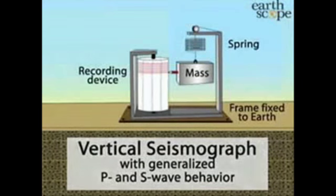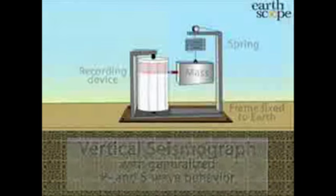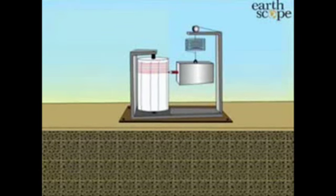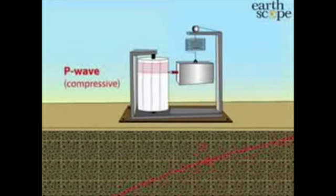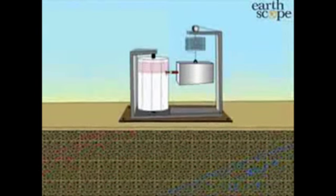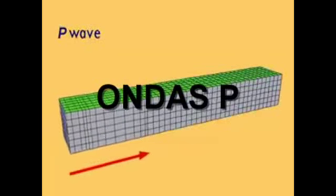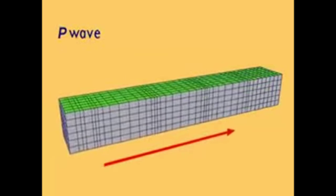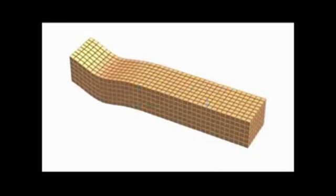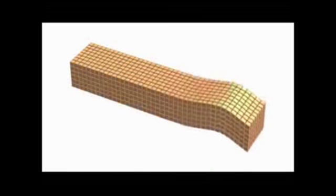Los terremotos se miden a través de un instrumento llamado sismógrafo, que registra en un papel la vibración de la Tierra producida por el sismo. A estos gráficos se llaman sismogramas, y nos informan de la magnitud y la duración. La secuencia típica de un terremoto es: primero el arribo de un ruido sordo causado por las ondas P compresivas, luego las ondas S cortantes, y finalmente el retumbar de la Tierra causado por las ondas superficiales.